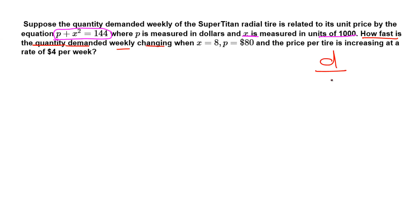How fast means the rate d over dt, rate of quantity, that means X, because we have only two variables: P, price, and X. So in this case X, this is what, per week, when X is given 8 and P is given 80.